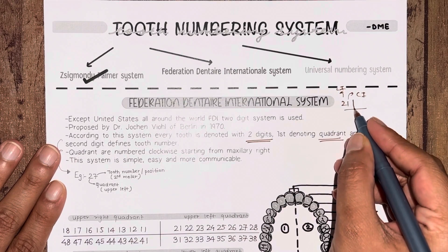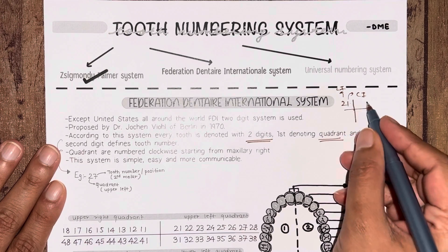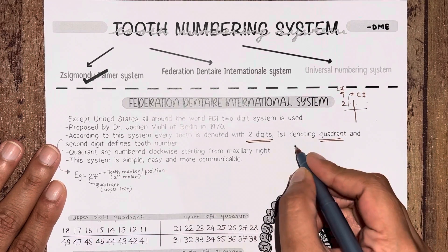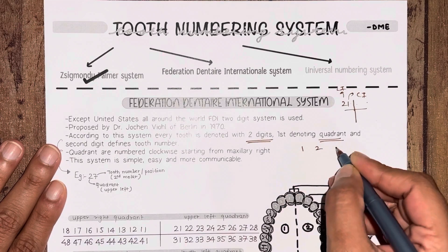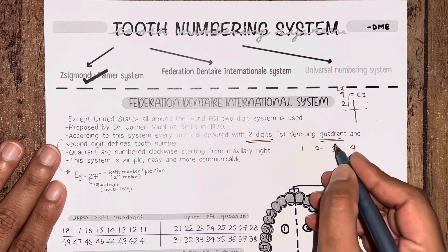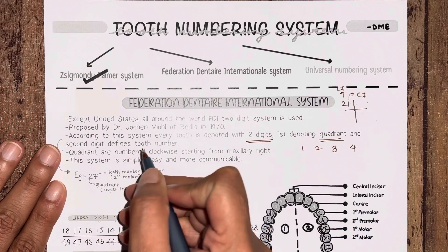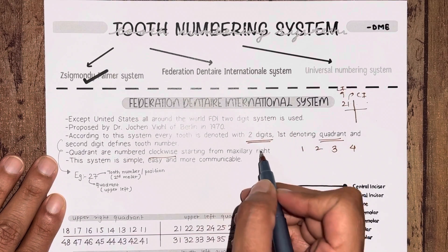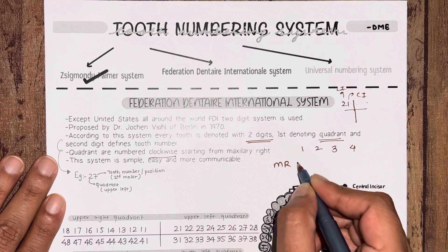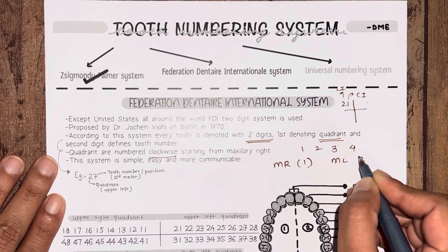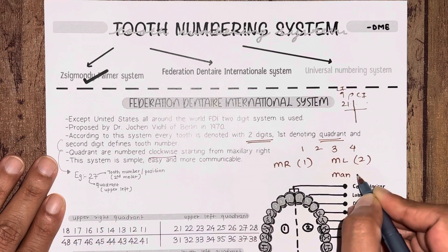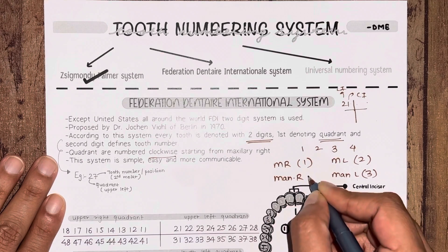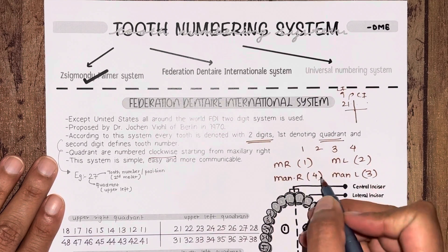The first digit denotes the quadrant. In Zsigmondy-Palmer you are not writing the quadrant number, whereas in FDI you write the quadrant number first — whether it is the first, second, third, or fourth quadrant. The second digit is the number of the tooth. This numbering is done in a clockwise manner, starting from the maxillary right side. So the maxillary right side is the first quadrant, maxillary left is the second, mandibular left is the third, and mandibular right is the fourth quadrant.